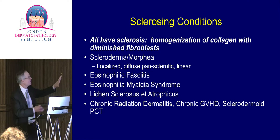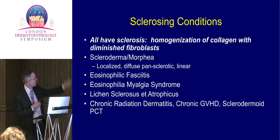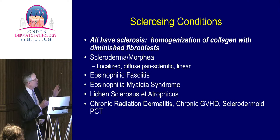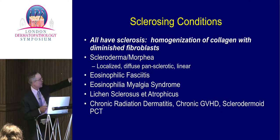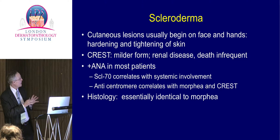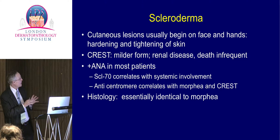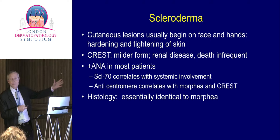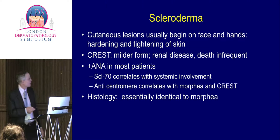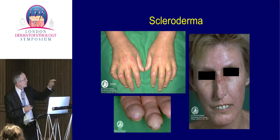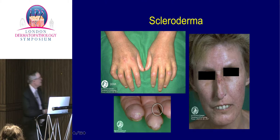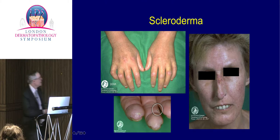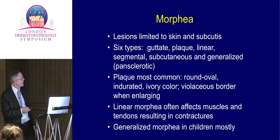Moving from vasculitis to sclerosing connective tissue diseases — morphea, scleroderma, eosinophilic fasciitis — all share homogenization of collagen with a decrease in the number of fibroblasts. Scleroderma produces thick sclerotic skin on the face and hands with tightening and hardening. The CREST form is generally milder with telangiectasias and calcinosis cutis. ANA is positive in many patients, with different ANAs than lupus — SCL70 correlates with systemic involvement. Clinically you see acrosclerosis, pinch facies, inverse pterygium of the nails, mat-like telangiectasias very characteristic of CREST, and calcification.